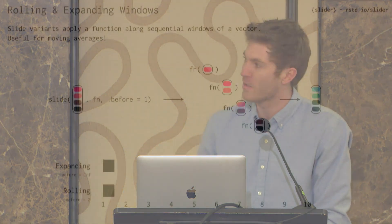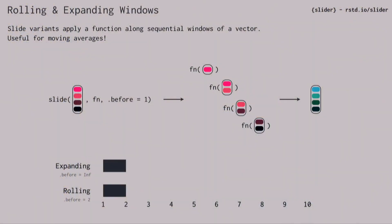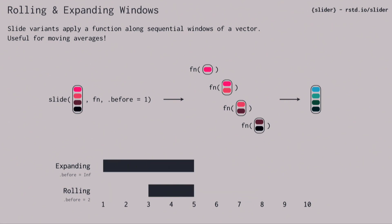This is a talk about two packages. The first one is called Slider, and the second one is called Almanac. Yes, I'm going to do two packages in five minutes. Slider is a package for rolling and expanding windows. If you've ever used Zoo's RollApply or Sybil's Slide before, this is the more supercharged version of those.